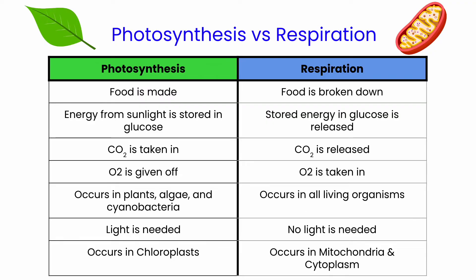Light is needed for photosynthesis, whereas no light is needed for respiration. Finally, photosynthesis occurs in organelles called chloroplasts, whereas respiration happens in the mitochondria and the cytoplasm.